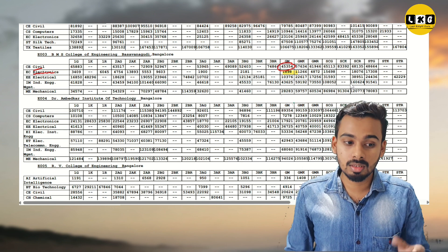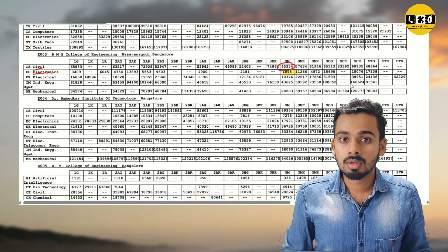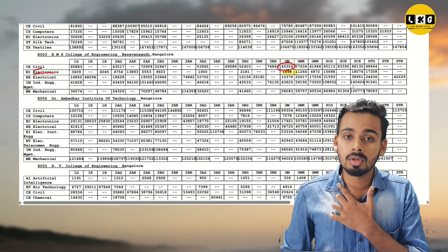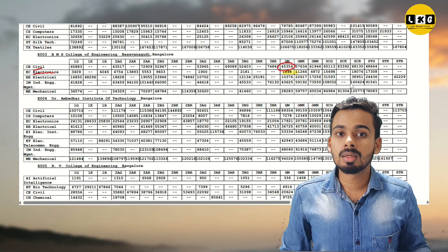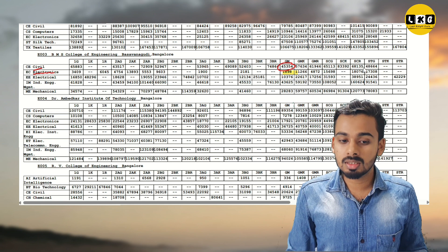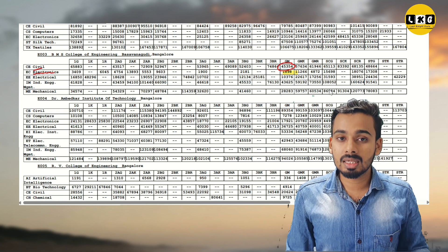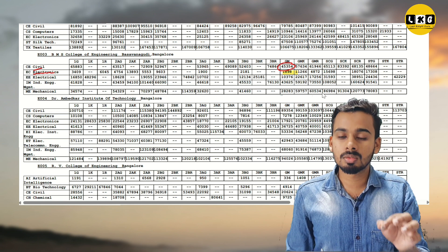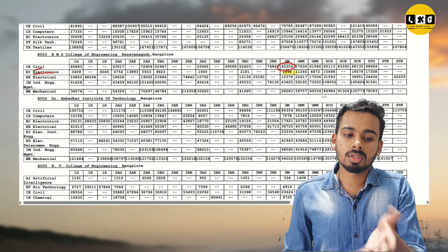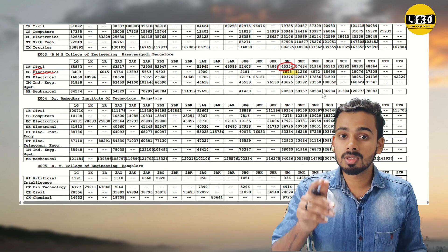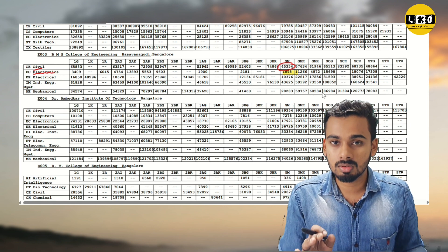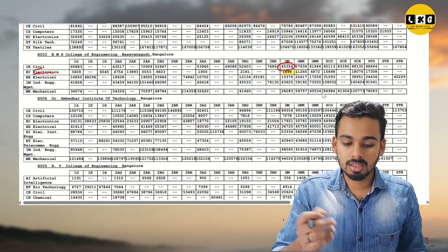At BMS College Bangalore, for the electrical branch in General Merit, the cutoff is around 1,898 rank — that is a very competitive rank. So if your ranking falls in that range, you can get a seat in the electrical course at BMS College. You can see all these rankings in the PDF — the download link is given in the description or directly from the e-portal.